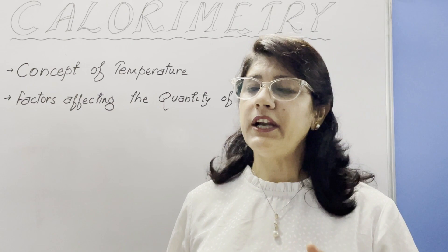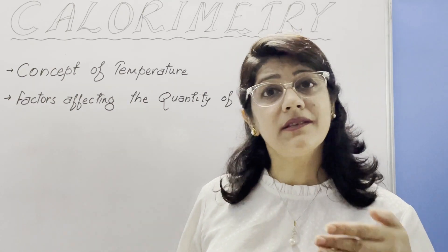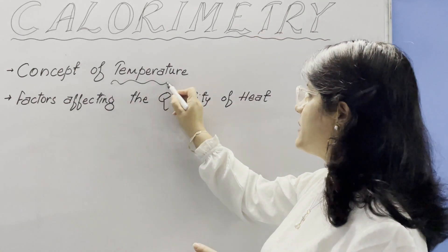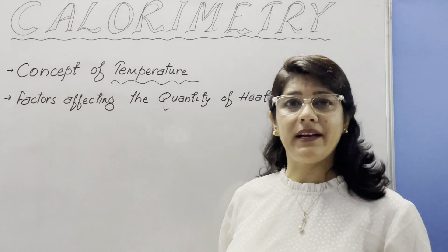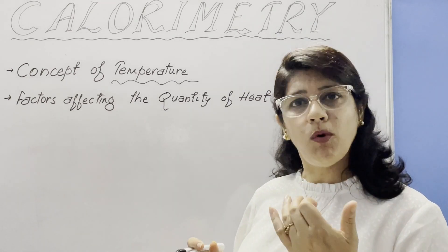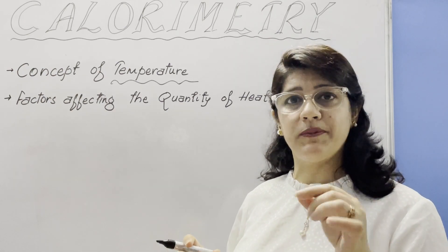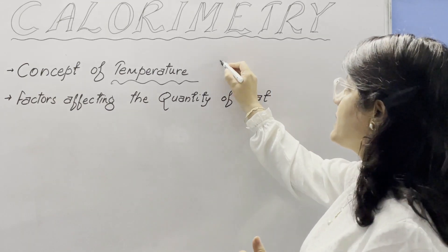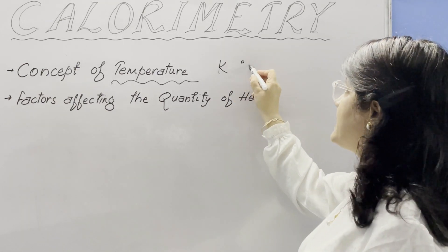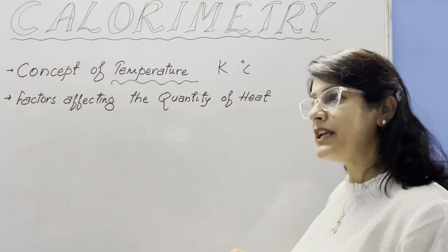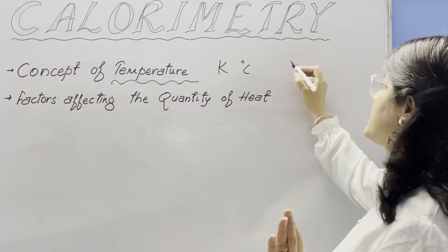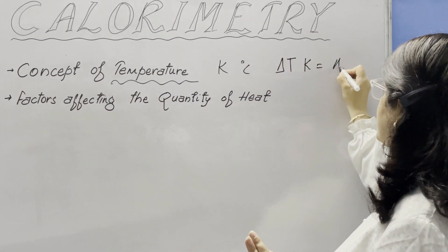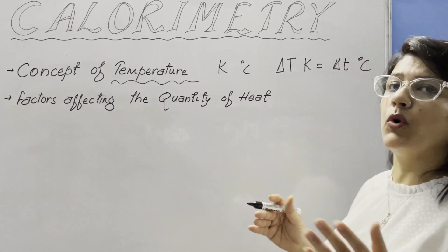As we know, heat flows — but what factor determines the direction of flow of heat? Temperature. Temperature is the parameter which decides the direction of flow of heat between two bodies at different temperatures when they are kept in close contact. The SI unit of temperature is Kelvin; other units are degree Celsius or Fahrenheit. The degree difference on both the Celsius and Kelvin scales is the same, so a change in temperature in Kelvin equals the change in temperature in degrees Celsius.